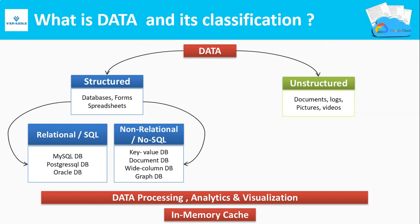Data is basically classified into structured and unstructured. Structured data has a schema, whereas unstructured data does not have a schema. A schema is nothing but a skeleton which holds the information, using which you can easily infer what the data is.